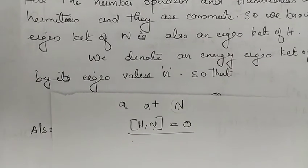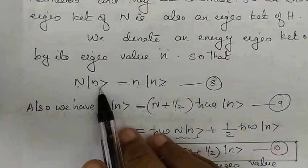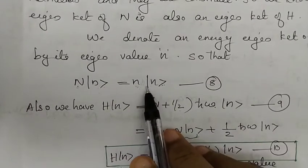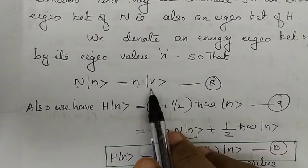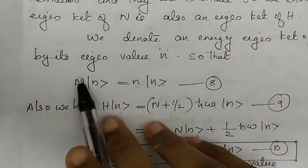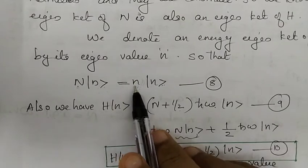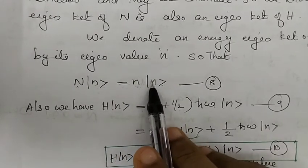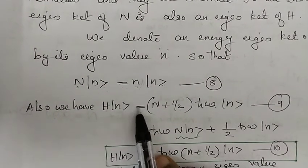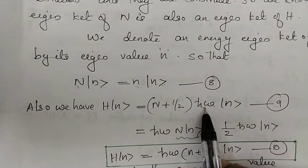Since H and N commute, the energy eigenket of H is also an energy eigenket of N. We denote an energy eigenket by ket n. The number operator N acting on ket n gives eigenvalue n times ket n, and the Hamiltonian H acting on ket n gives the energy eigenvalue times ket n.